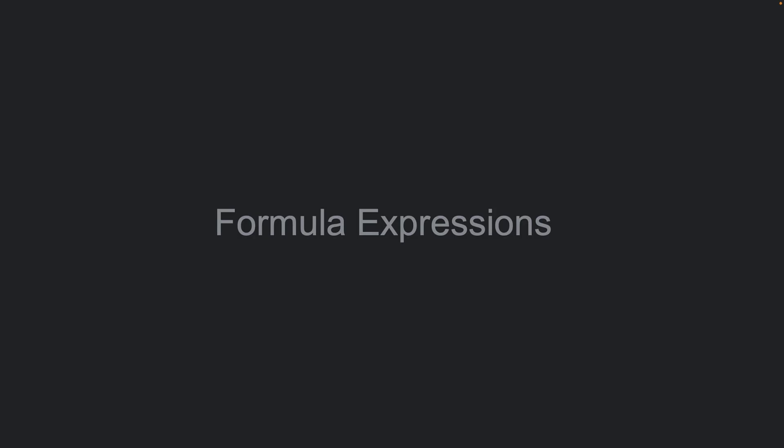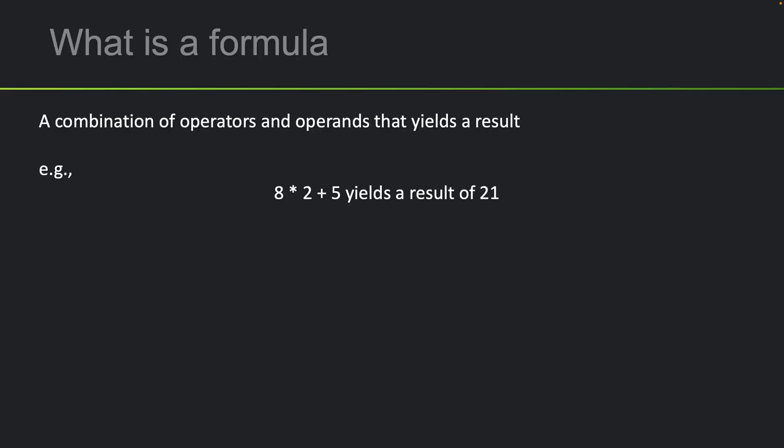Let's talk about formula expressions. A formula is a combination of operators and operands that yields a specific result. For example, 8 times 2 plus 5 yields a result of 21.